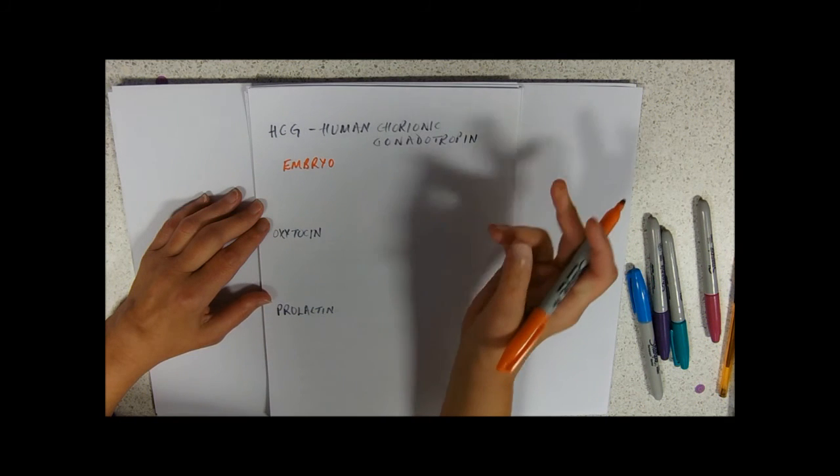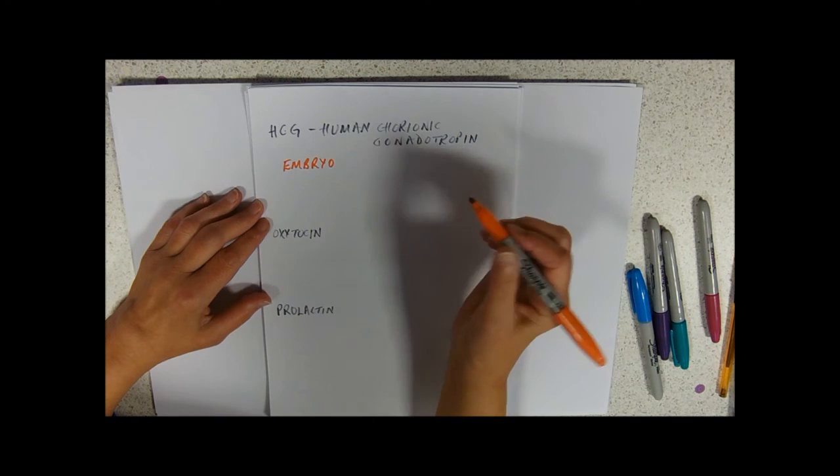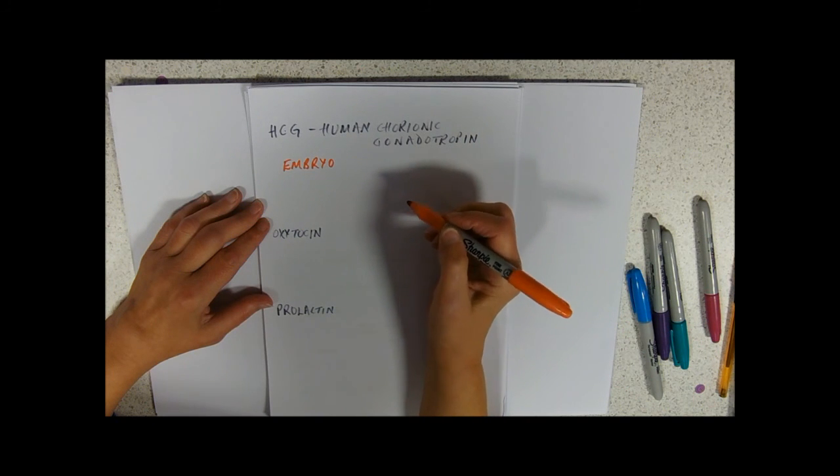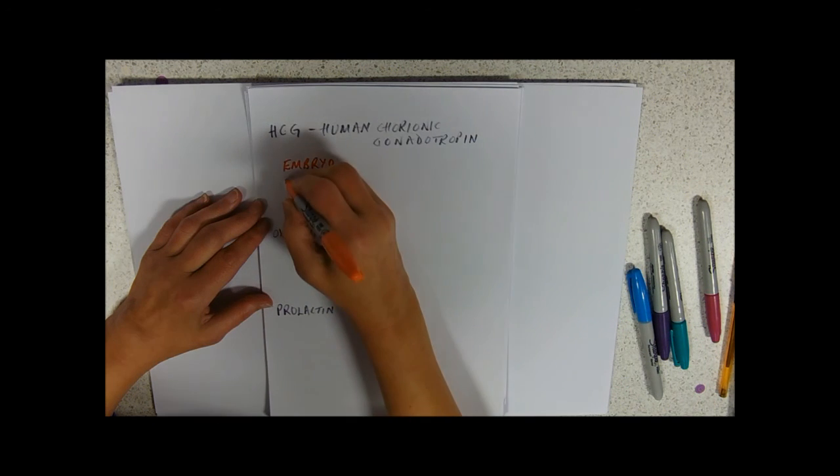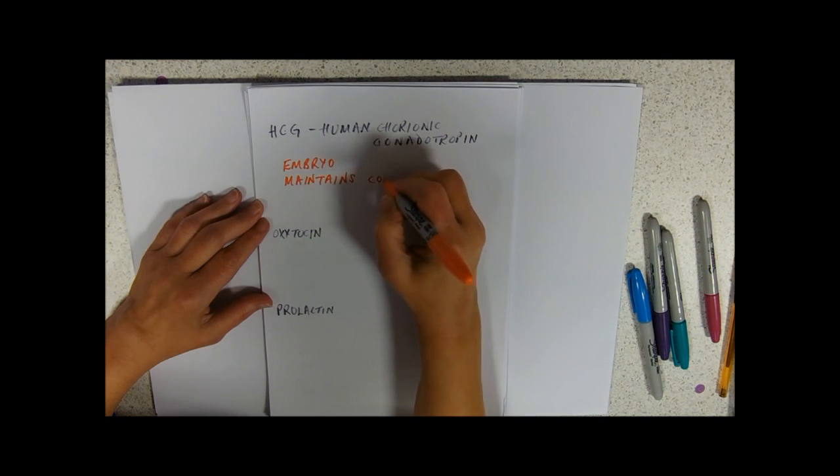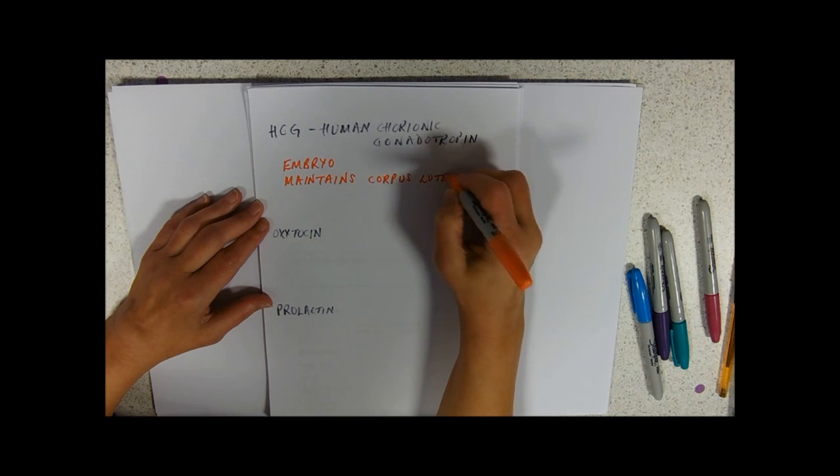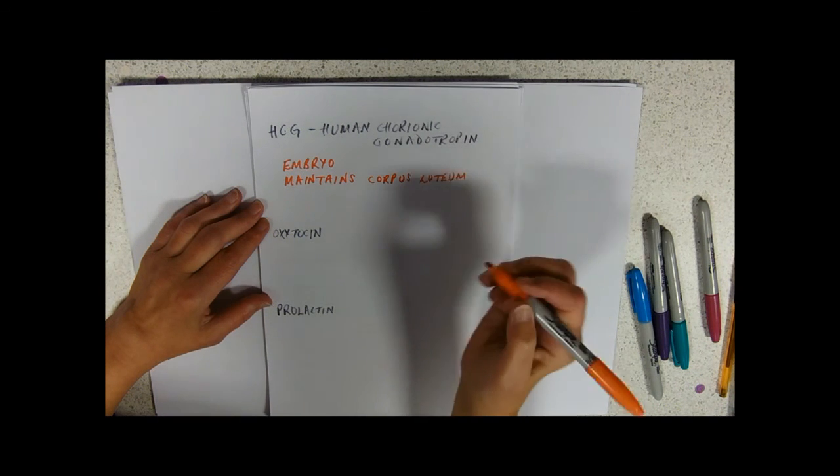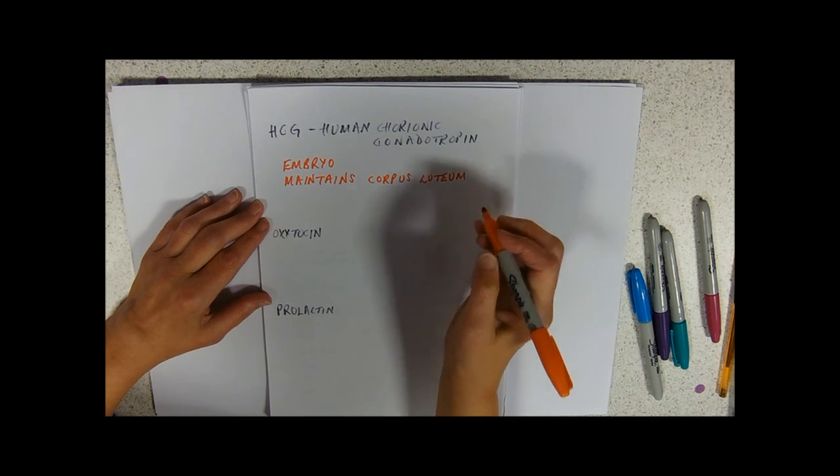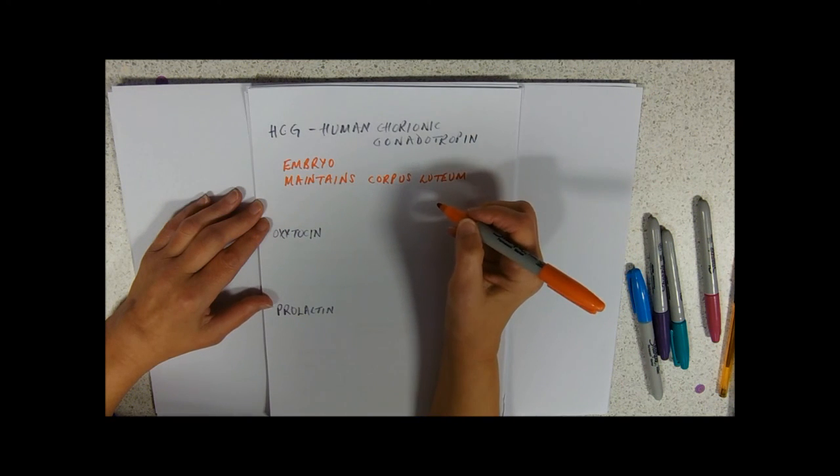So as soon as the embryo's formed and it's implanted, possibly even before that, it starts to churn out this hormone. And what this hormone does is it maintains the corpus luteum. You'll remember from the hormone graph video that in the luteal phase, the corpus luteum is churning out estrogen and progesterone. Both of those hormones are maintaining the lining.